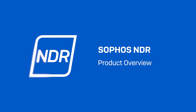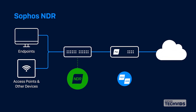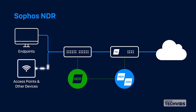Hi everyone. Today I'm going to give you an introduction to Sophos Network Detection and Response, also known as NDR. Sophos NDR provides critical visibility into network activity that other products miss. By leveraging machine learning, advanced analytics, and rule-based matching techniques, it continuously monitors traffic in your network to detect suspicious activity and malicious patterns that may indicate an attack.